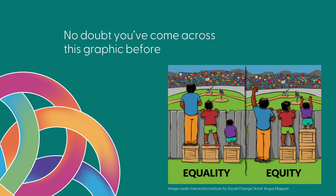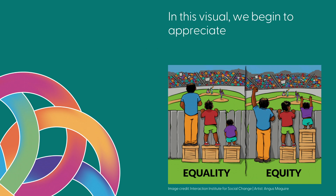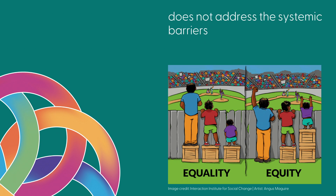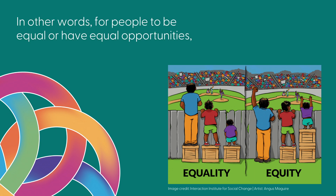Equal access implies that everyone should get the same, while equitable implies that everyone gets what they need. No doubt you've come across this graphic before to visualise this idea. In this visual we begin to appreciate that everyone getting the same does not address the systemic barriers that face many people, and that it is only by insisting on equity that equality is ultimately achieved. In other words, for people to be equal or have equal opportunities, we must pursue equity.